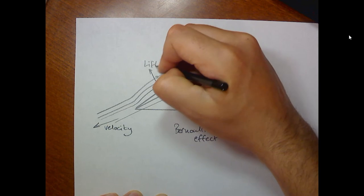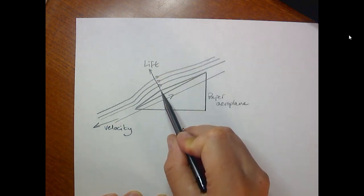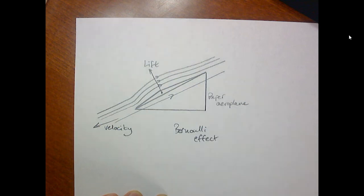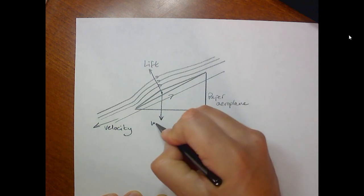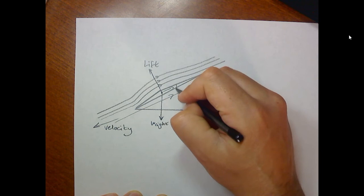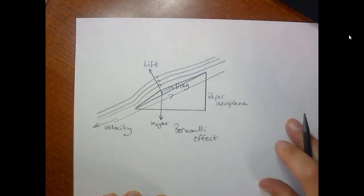The Bernoulli effect causes lift. And the lift is in that direction because it's kind of perpendicular at right angles to the wing. We've got some lift in that direction. Of course, we've got weight pulling down on the plane as well. These are force arrows now. And we've got a little bit of drag.